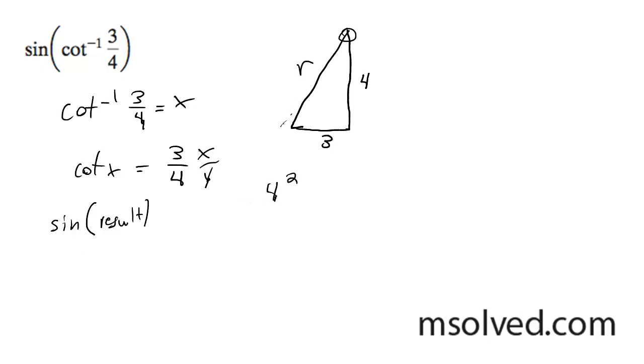So it's going to be 4 squared. We use the Pythagorean theorem. Plus 3 squared equals r squared. And simply r squared equals 25. And then r, the absolute value, is just going to be 5.